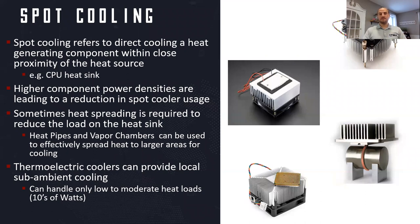We can dissipate that energy by mounting a fan to it or ducting air directly to where the heat generating component is. If more space is needed, sometimes we can spread the heat — for example, spreading a 10mm x 10mm computer chip to 50mm x 50mm to reduce the load on the heat sink. If you don't have more than 50mm available, then we need to move to a remote cooling application where we move the heat from your chip to where you do have space. There is also a sub-ambient option using thermoelectric devices, which are solid-state passive cooling devices that can provide local cooling below ambient temperature directly on your chip.